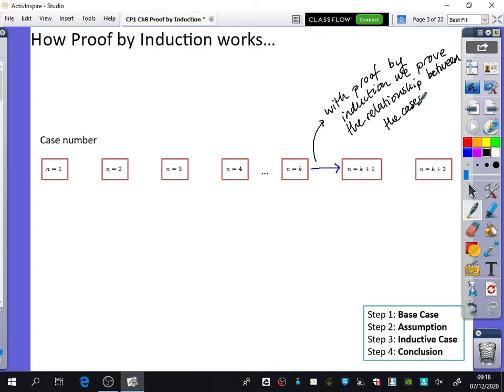So we're not trying to show that it is true for all of these values. What we're going to try and show instead is that if it's true for this, then I can prove that it would also be true for the next one as well. We're going to assume that this one is true. We're going to try and prove that the relationship or the stage of going from one to the next is true.